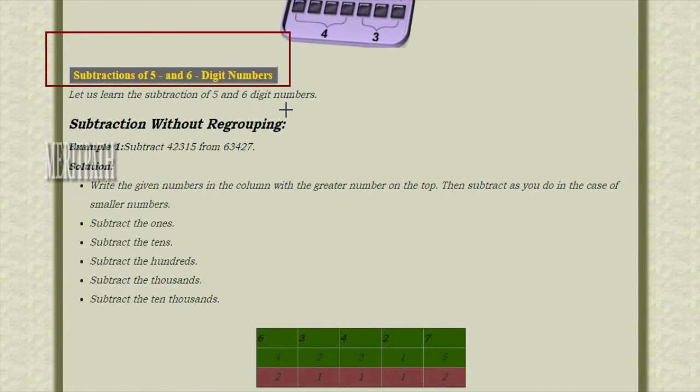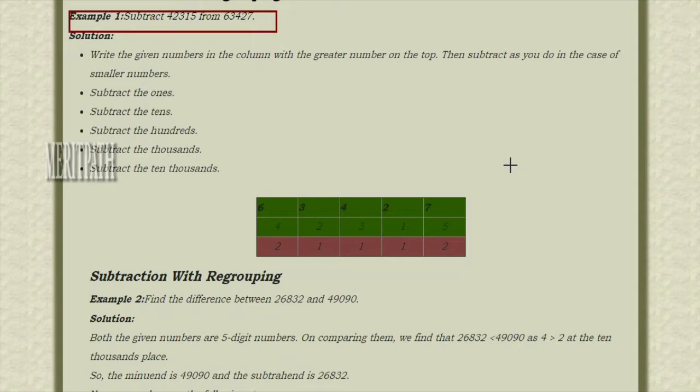Subtraction of 5 and 6 digit numbers. Subtraction without regrouping. Let us take an example: 42,315 and 63,427. We need to subtract 42,315 from 63,427.